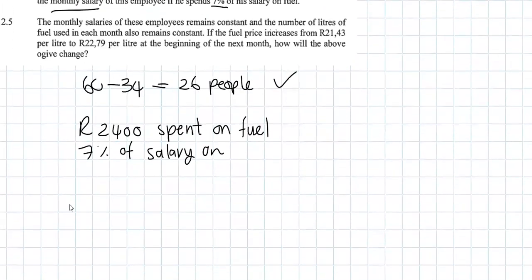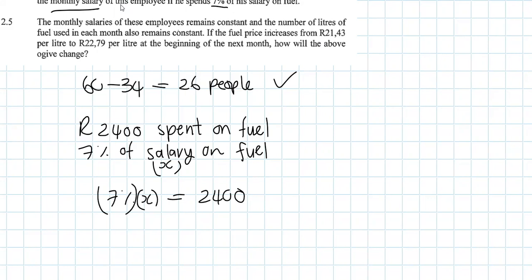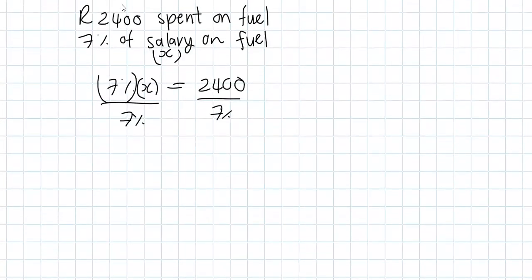We don't know what his salary is. We know that he spent 7% of his salary on fuel. So we can make an algebraic equation: 7% of his salary, let's call the salary x, so we know that 7% times x equals R2,400. To get x on its own to find out his salary, we just divide each side by 7% or 7 over 100.